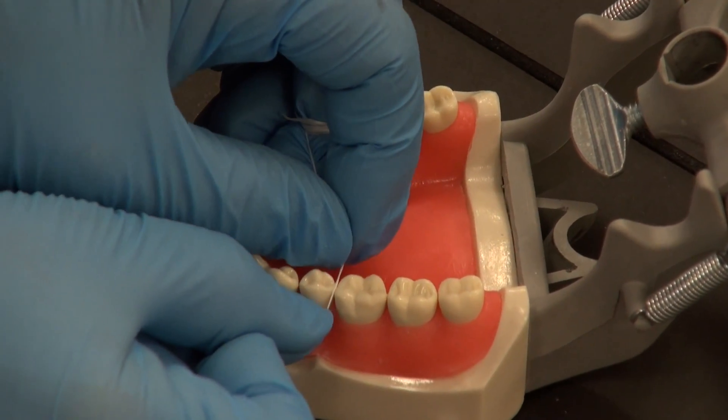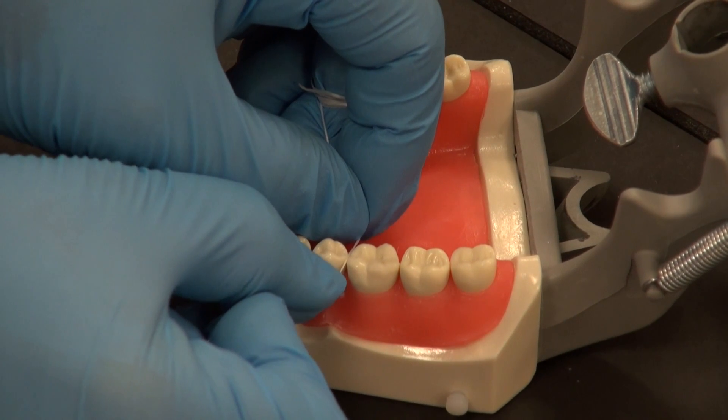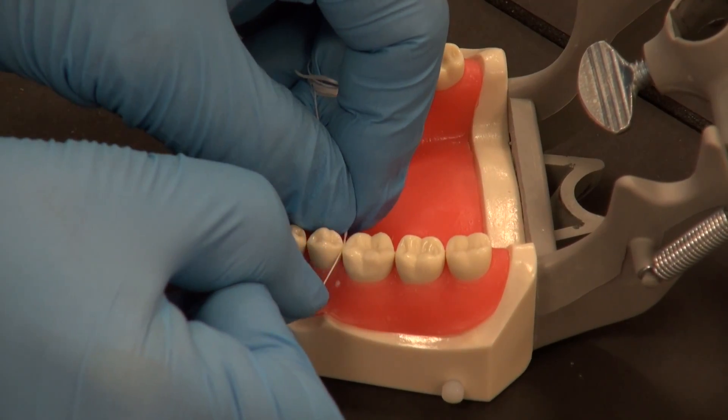The reason you want to seesaw in between the teeth is so you don't create lacerations on the papilla with the dental floss.